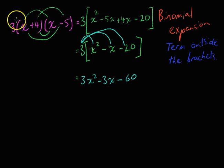So you can see it's a two-step process. Do your binomial expansion first, this bit here, and then multiply by 3 at the end using your distributive method, multiplying each thing by that 3.